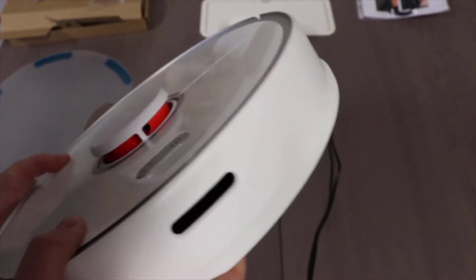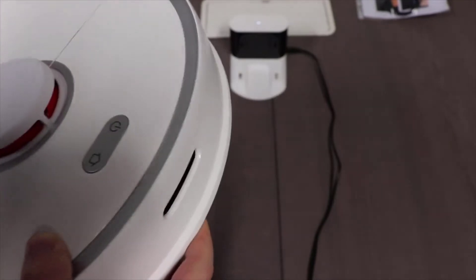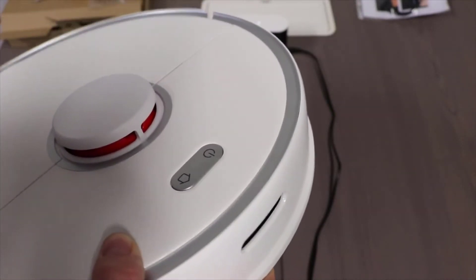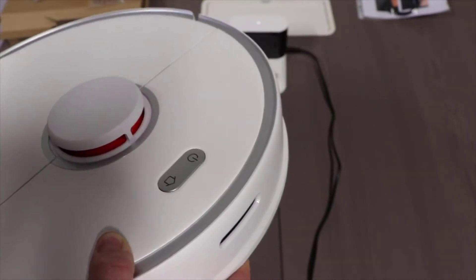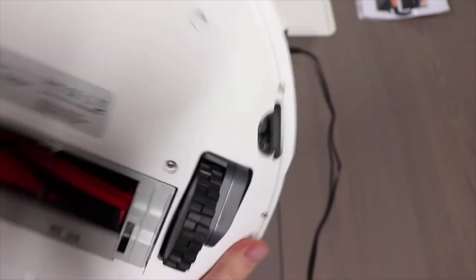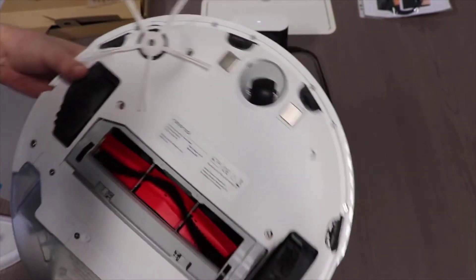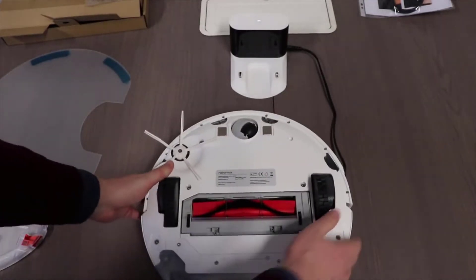Basically what it does is it goes around the edge of your entire home, really anywhere it can get to, maps it out, and then it starts to do nice, even, straight carpet lines through room by room through the entire house, which I really like. For one, it's way better than a random one. Random ones, you don't even know if it's getting the right area. You get this random look on your carpeting. It's like a two-year-old vacuumed your entire house.